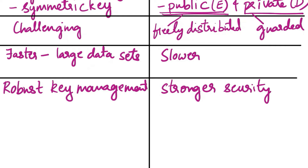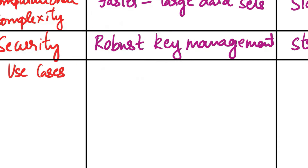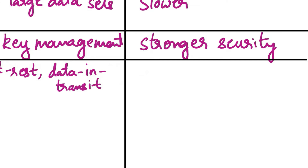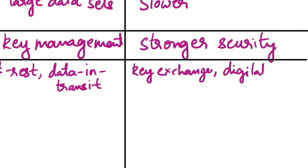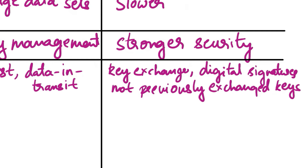The next aspect is use cases. Symmetric cryptography is typically used where secure key distribution is feasible, such as securing data at rest and data in transit. Asymmetric cryptography is commonly used for secure key exchange (e.g., Diffie-Hellman), digital signatures for verifying message authenticity, and secure communication between parties that have not previously exchanged keys.